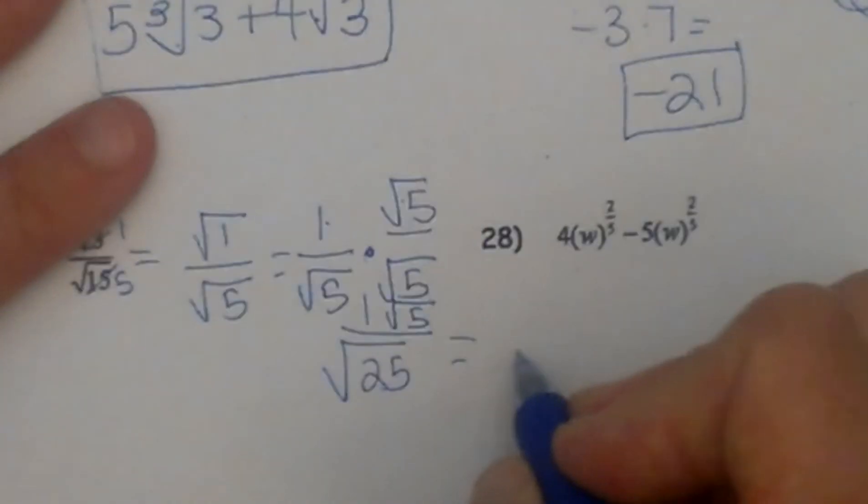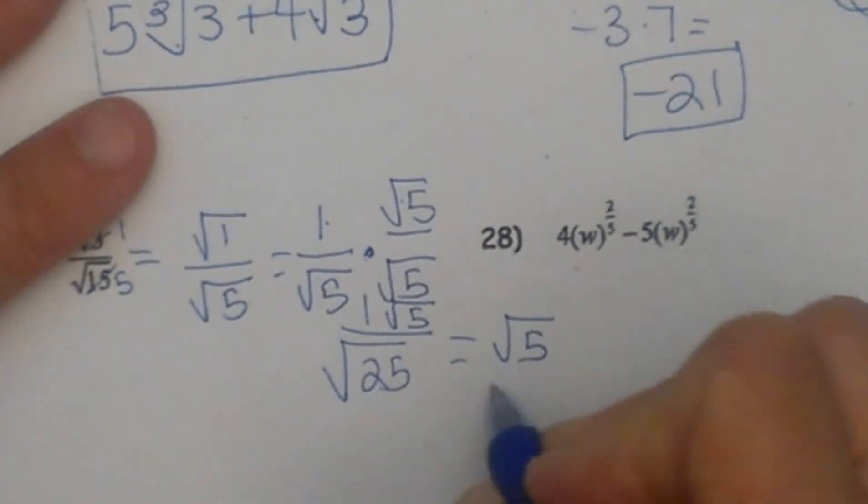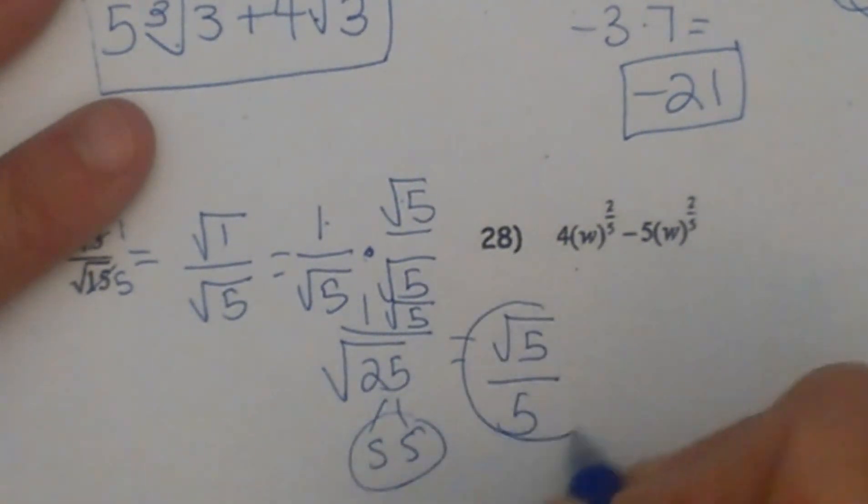So this simplifies to just the square root of 5 on top, and then square root of 25 is 5 and that is on the bottom. So notice we created a perfect square in the denominator, and that is all you do.